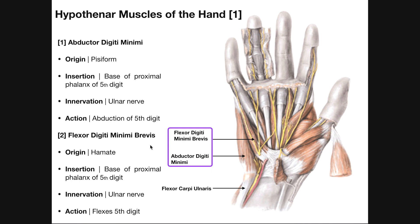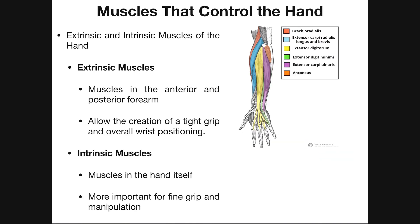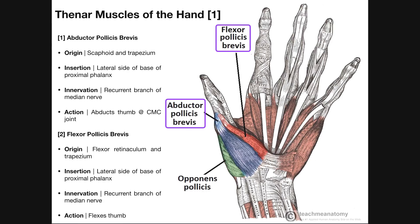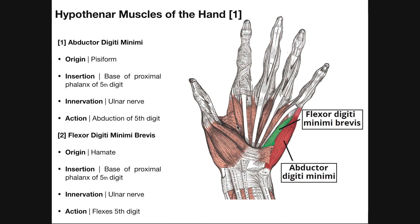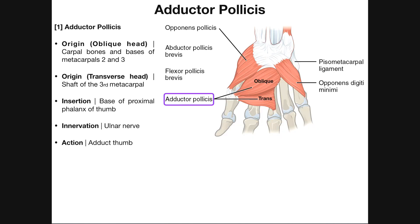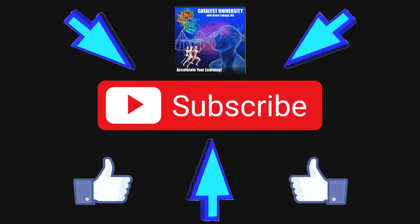So far in the past two videos we've seen two sets of intrinsic muscles of the hand. Thenar muscles control movements of the thumb and are innervated by the recurrent branch of the median nerve. Hypothenar muscles produce movements of the fifth digit — the pinky, or digiti minimi — and are innervated by the ulnar nerve. In the next video, we're going to switch gears and talk about other intrinsic muscles of the hand. Please make sure to like this video and subscribe to my channel for future videos and notifications. Thank you.